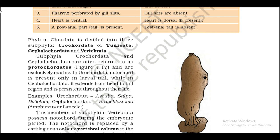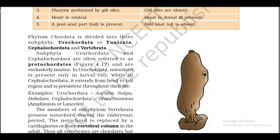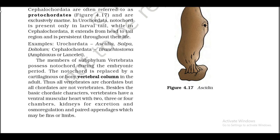Phylum Chordata is divided into three subphyla: Urochordata or Tunicata, Cephalochordata, and Vertebrata. Subphyla Urochordata and Cephalochordata are often referred to as protochordates (Figure 4.17) and are exclusively marine. In Urochordata, notochord is present only in the larval tail, while in Cephalochordata it extends from head to tail region and is persistent throughout life. Examples — Urochordata: Ascidia, Salpa, Doliolum; Cephalochordata: Branchiostoma (Amphioxus or Lancelot). The members of subphylum Vertebrata possess notochord during the embryonic period. The notochord is replaced by a cartilaginous or bony vertebral column in the adult. Thus all vertebrates are chordates, but all chordates are not vertebrates. Vertebrates have a ventral muscular heart with two, three, or four chambers, kidneys for excretion and osmoregulation, and paired appendages which may be fins or limbs.